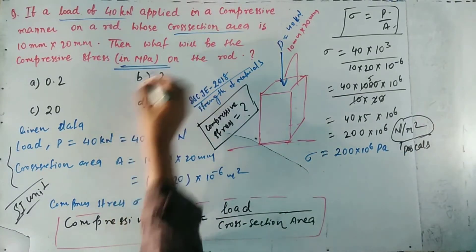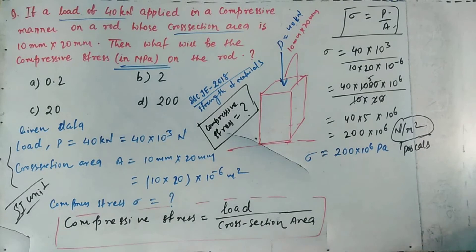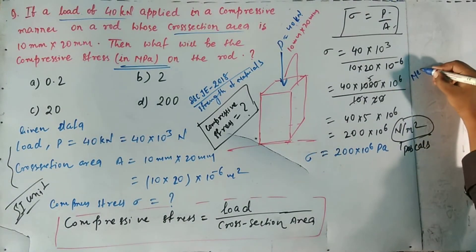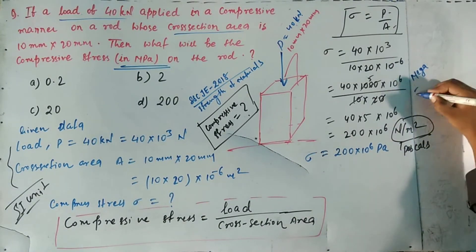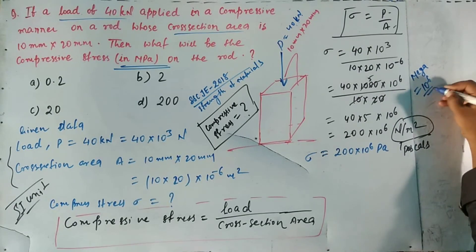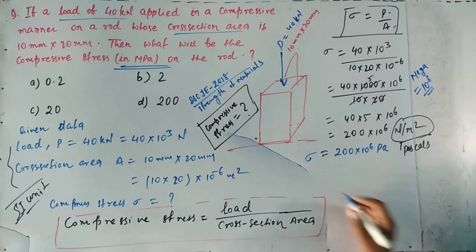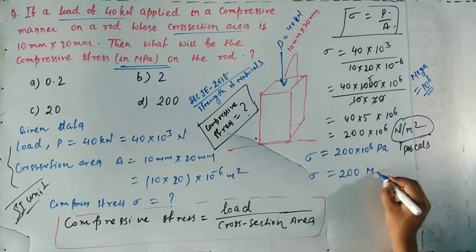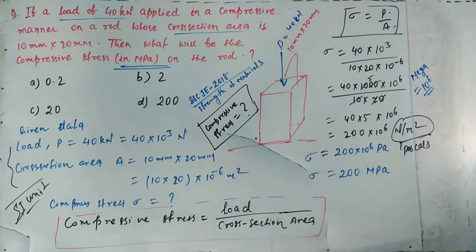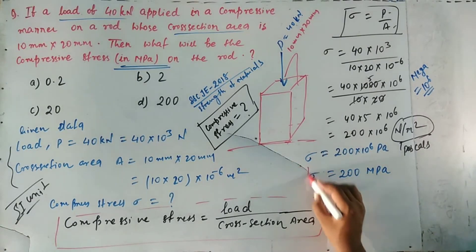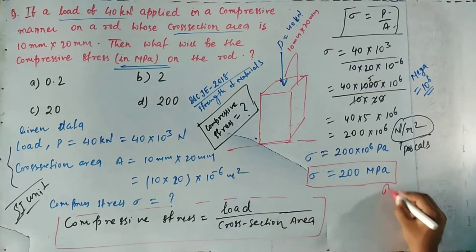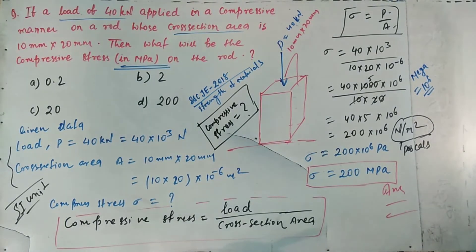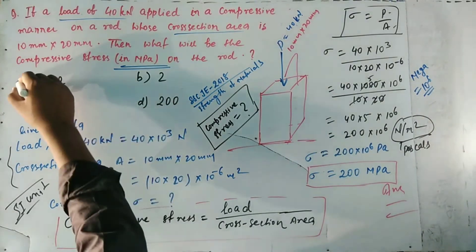We have to find the value in Mega Pascal as asked by the question. Mega equals 10⁶, so dividing Sigma by 10⁶, we get Sigma equals 200 Mega Pascal. This is the value of compressive stress, which is 200 MPa.